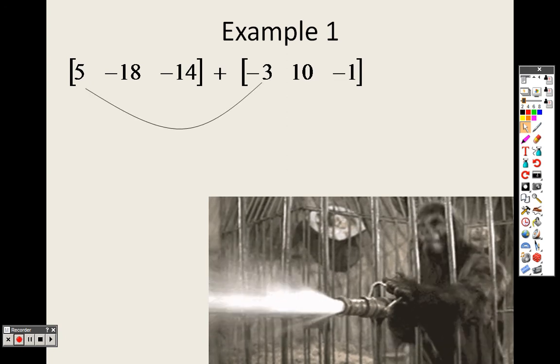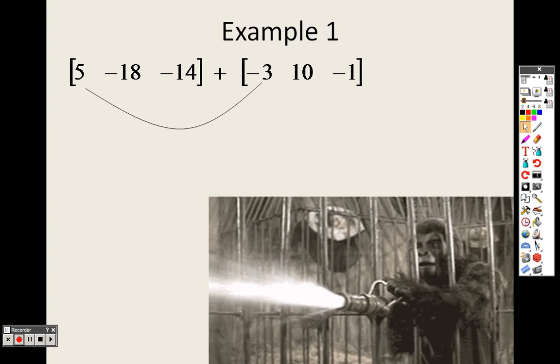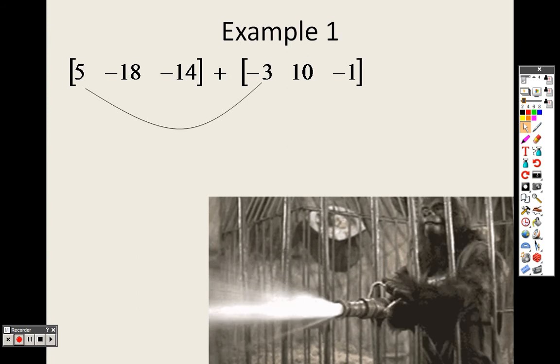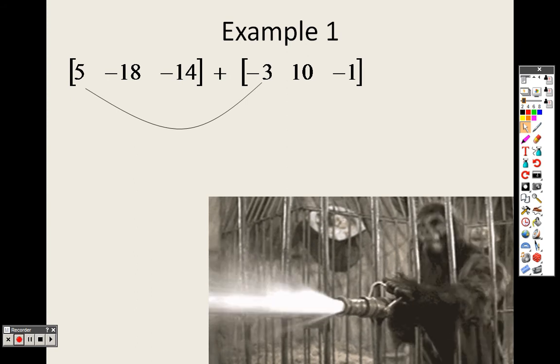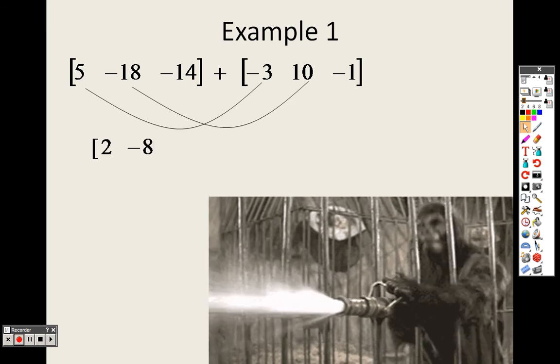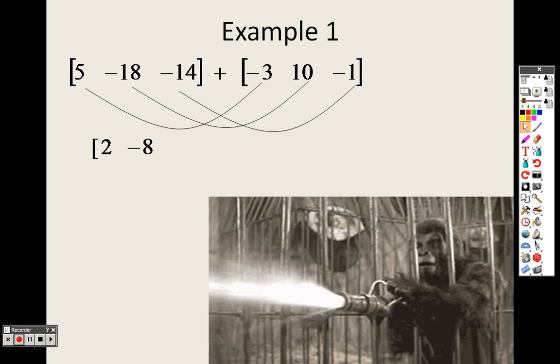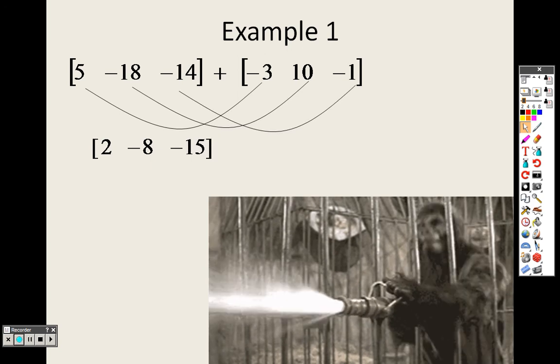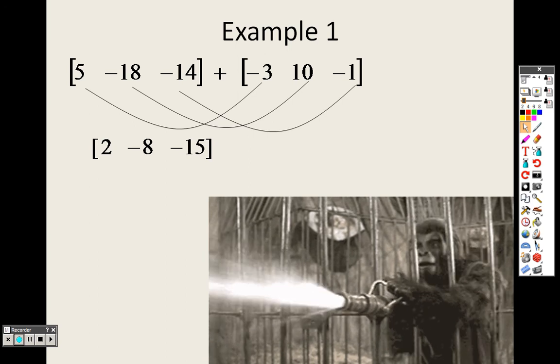Very simple. When you have two matrices and you're adding matrices, you add the positions. 5 plus negative 3 is 2, 8, negative 18 plus 10, negative 8. Negative 14 plus negative 1 is negative 15. Literally, you add the matrices together from position to position. That's it.